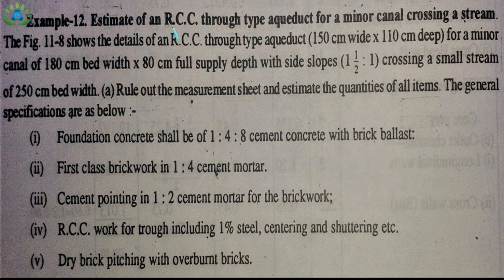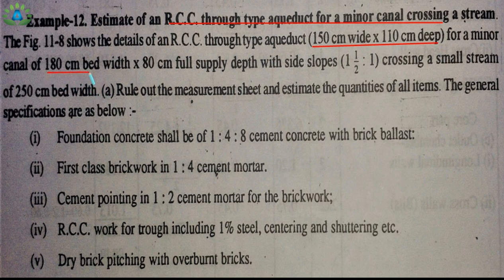Today we are going to do the estimation of the RCC trough-type aqueduct for a minor canal crossing a stream. We have the trough type of aqueduct having the width of 150 and the depth of 110 centimeter. We have a minor canal of 180 centimeter width, the full supply level is 80 centimeter, and it has a side slope of 1½ to 1 ratio. We are going to find out these quantities.